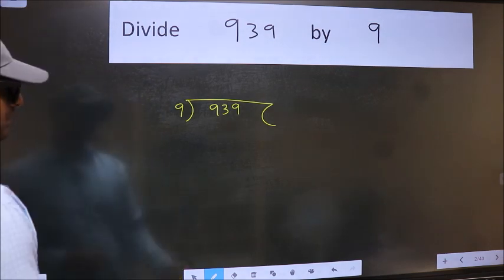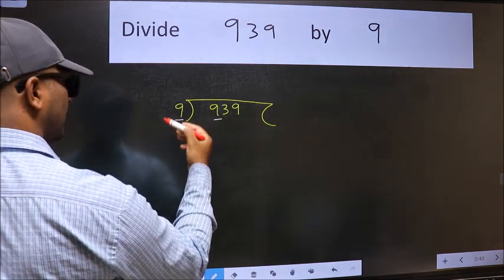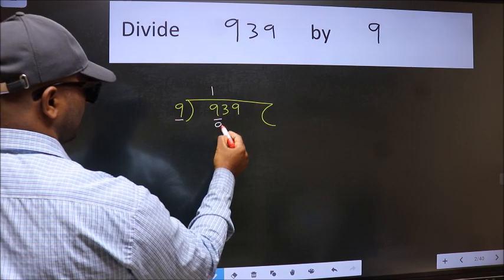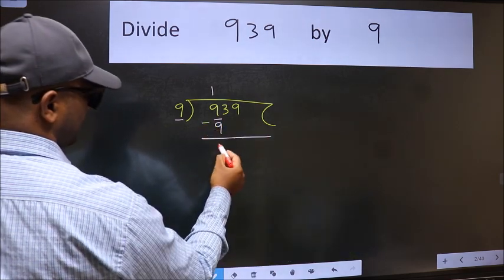Next, here we have 9 and here 9. When do we get 9 in the 9 table? 9 times 1 is 9. Now we should subtract. We get 0.